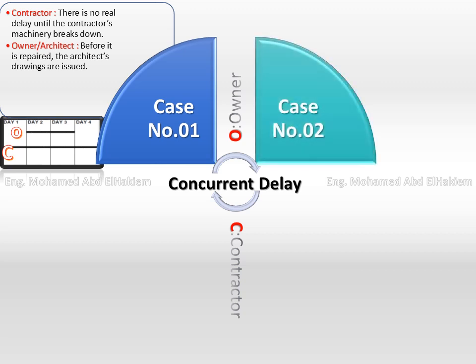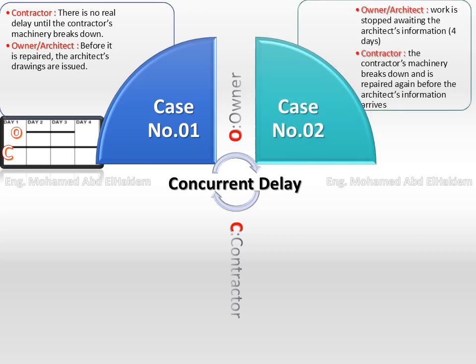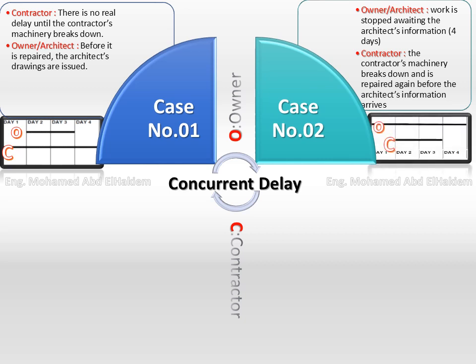Case number 2. Owner situation: work is stopped awaiting the architect's information, four days. Contractor situation: the contractor's machinery breaks down and is repaired again before the architect's information arrives.